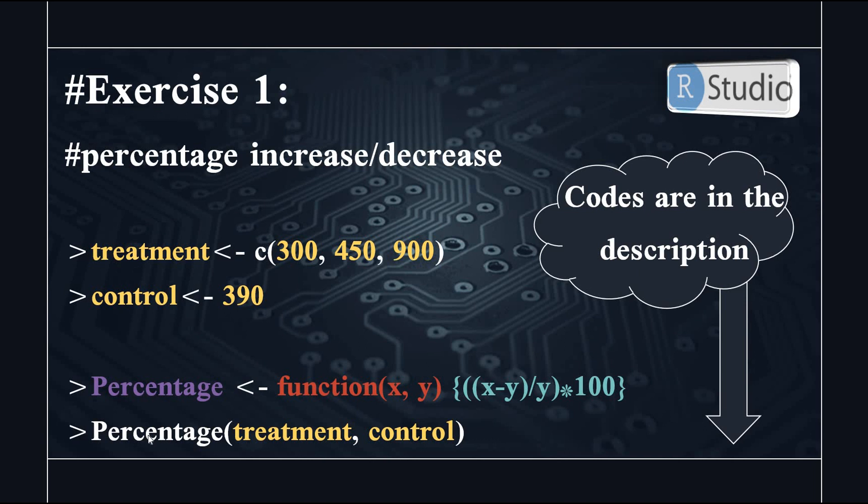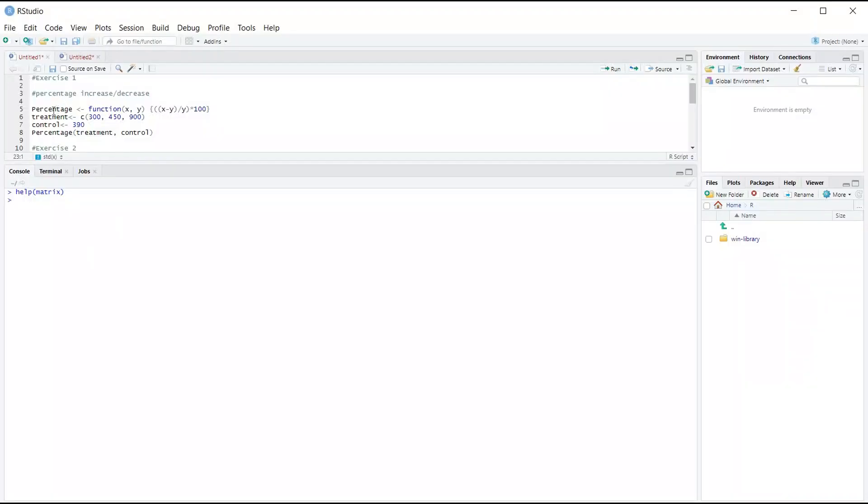So this is now a function in R called percentage. So now I'm going to call percentage. I'm going to use it. So what I need to do is I need to write percentage and between two round brackets, I'll write my two input values. So let's go to treatment and the control. So let's go to R Studio. Here in exercise one, first we are going to create our function here.